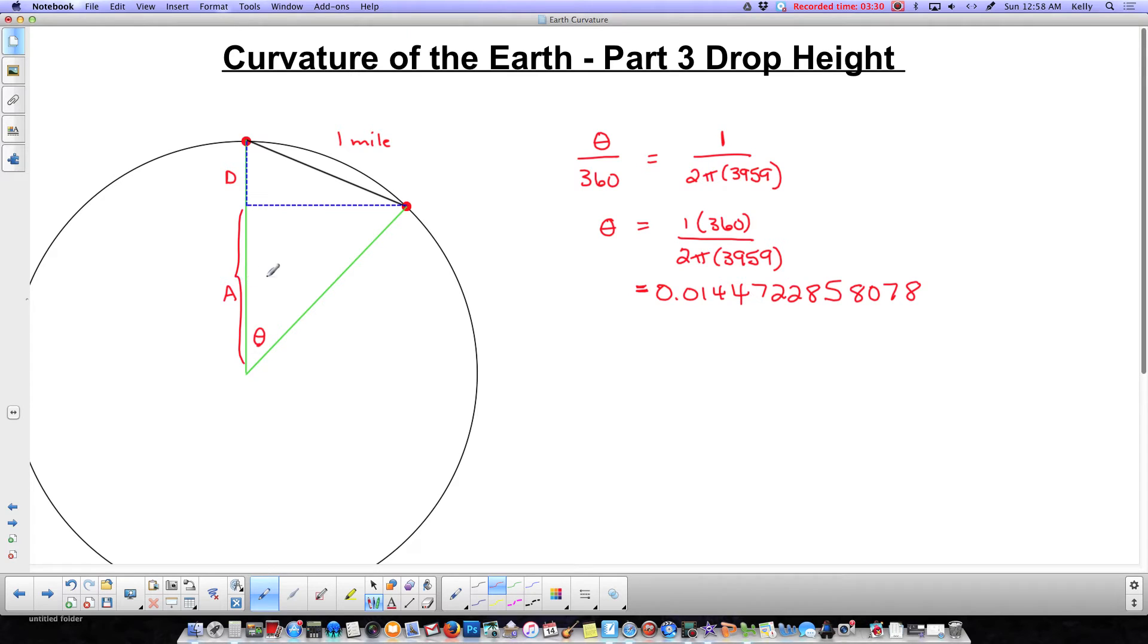Well, that a is the adjacent side, and this is the hypotenuse, which is, of course, also a radius of the circle. So we've got 3959 there. So I'm going to calculate a by using adjacent and hypotenuse, which is cosine. So we need the cos of that angle theta. Remember, theta is measured in degrees.